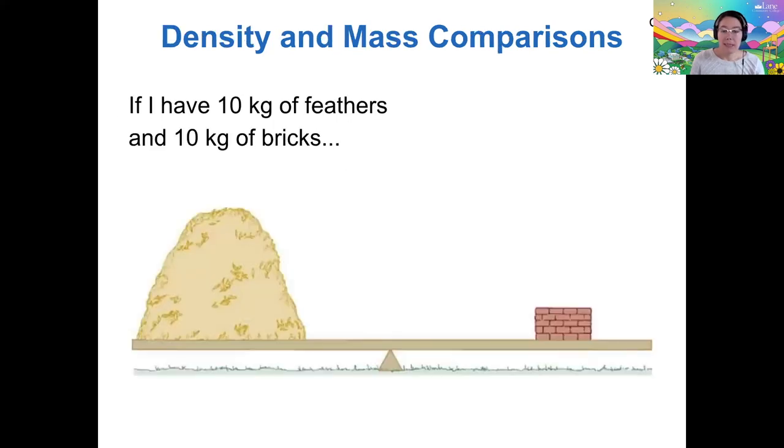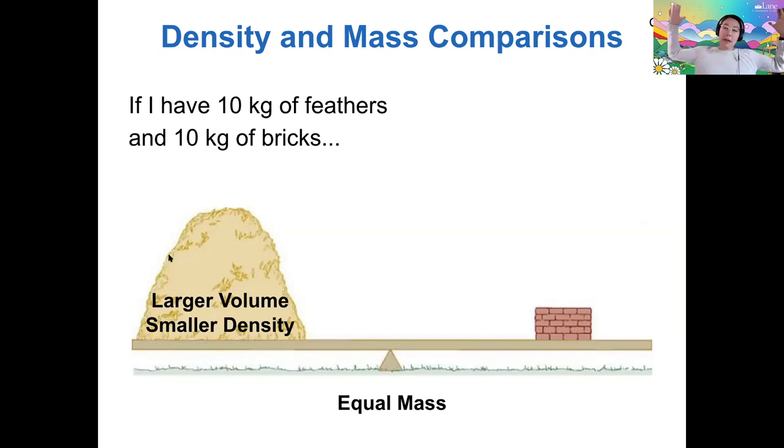So density and mass are very important concepts for comparative planetology. So let's say that I have 10 kilograms of feathers and 10 kilograms of bricks. They have equal mass. So if I was going to put them on a balanced scale, then they both have equal mass, even though we know that feathers are quite different than bricks. So the feathers, they have a much larger volume, they take up a lot more space to have the same amount of mass, because they have smaller density. So this is just a simple example of density.